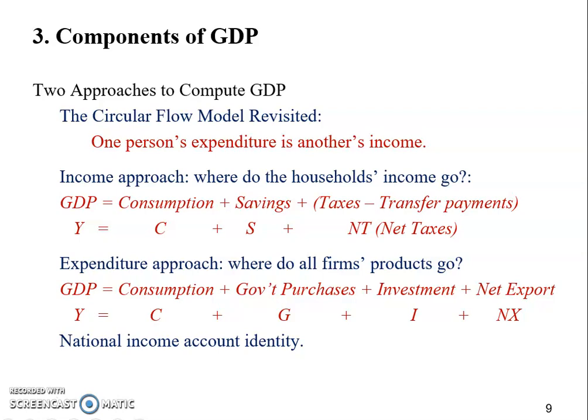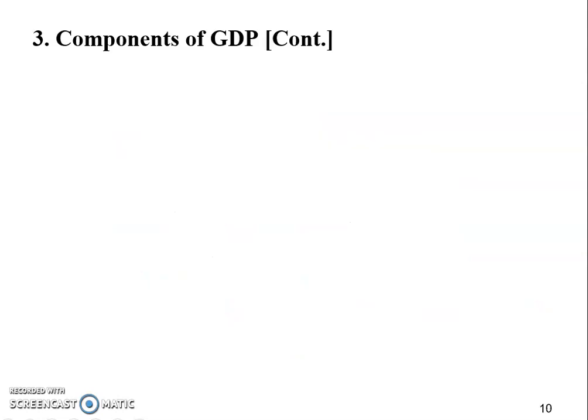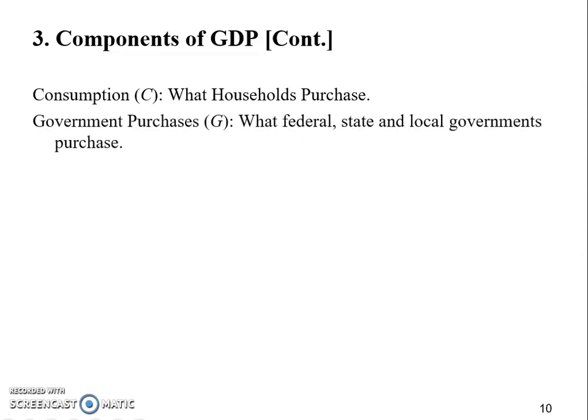These two equations are called the national income account identity — identity means they are always equal by definition, left side equals right side. The expenditure approach is used more often than the income approach. The first component is consumption: whatever households purchase — TVs, Xboxes, kitchen appliances, computers, desks, and chairs — all purchased by households or families counts as consumption.